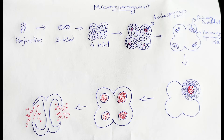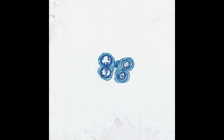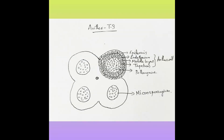Now we are going to see the CS of anther for this practical. The CS of anther shows the following layers: epidermis, endothecium, middle layers, tapetum, and then pollen grains. The other parts are labeled accordingly. The diagram is one score and the labeling is one score.